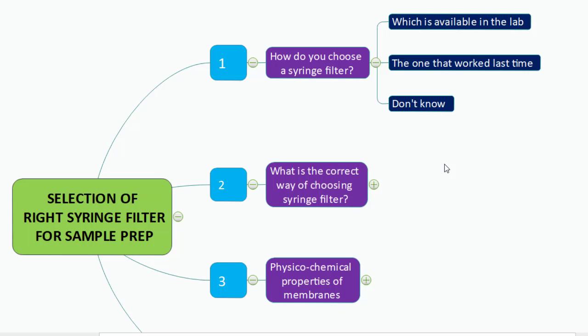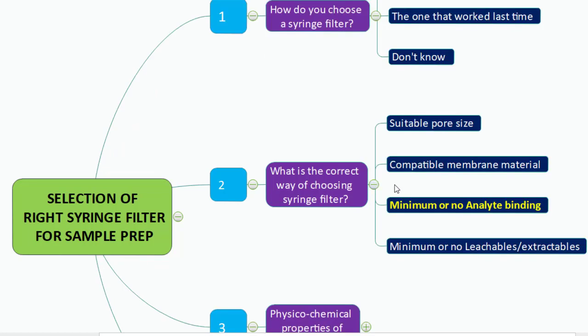If you don't know the answer, don't worry — we are going to talk about the selection process of the syringe filter. The selection of syringe filter can be based on four important characteristics. The first one is very important: suitable pore size. For HPLC, you can think about the 0.45 micron pore filter.